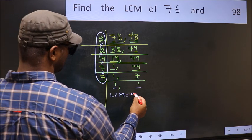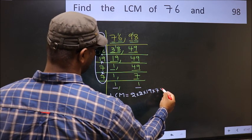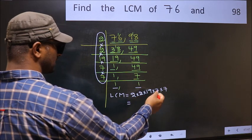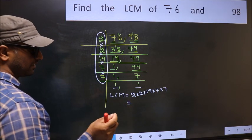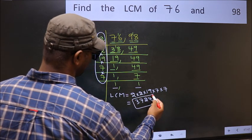That is 2 times 2 times 19 times 7 times 7. When we multiply these numbers we get 3724 as our LCM.